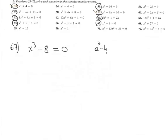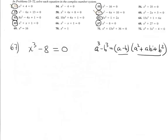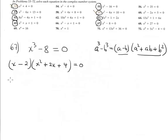Problem 67 is different because it is a cubic equation. We solve it by factoring — you have to remember the difference of cubes formula: A³ - B³ = (A - B)(A² + AB + B²). The factorization gives a binomial and a trinomial, and this trinomial always produces complex solutions. The cubic root of x³ is x, and the cubic root of 8 is 2, with a minus in between.